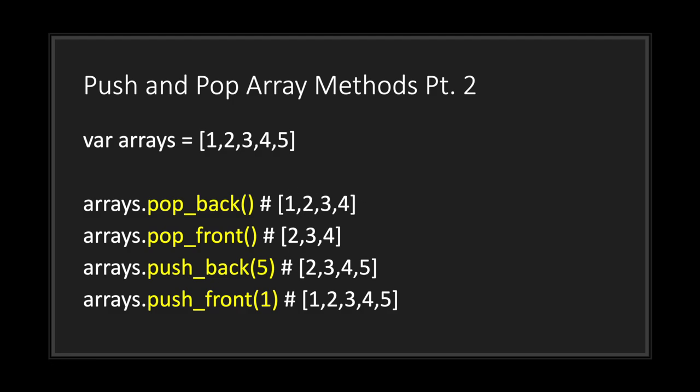To remove an element from the front of an array, use the pop_front method, which removes the element at index position zero. To add elements, use the push method: push_back adds an element to the end of the array, and push_front adds an element to the beginning.